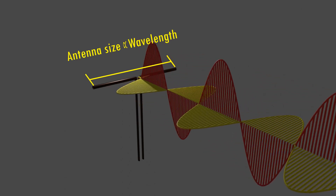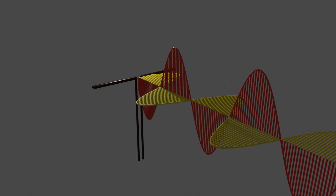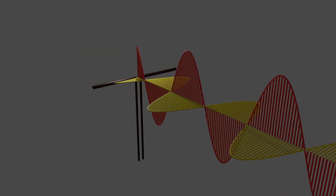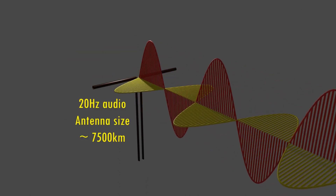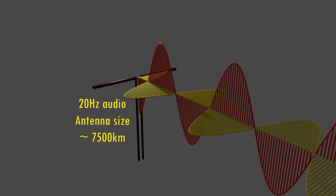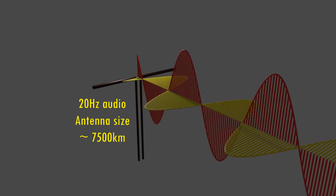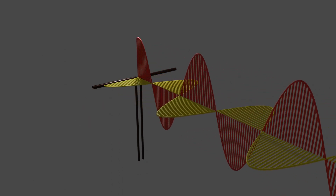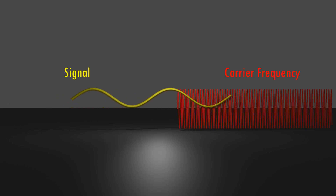There is a challenge: the size of the antenna must match the wavelength of the wave. For low-frequency signals, this would require impractically large antennas. For example, a quarter-wavelength antenna for a 20 Hz audio signal would need to be approximately 7,500 kilometers. To address this, we superimpose the low-frequency signal onto a high-frequency carrier wave through a process called modulation.